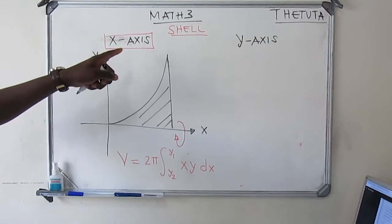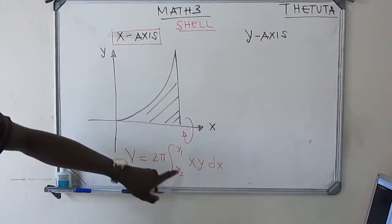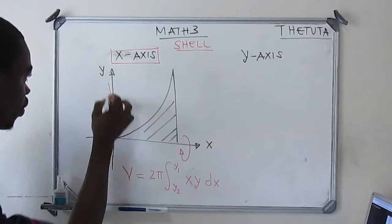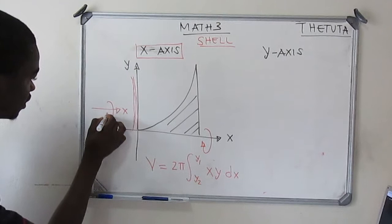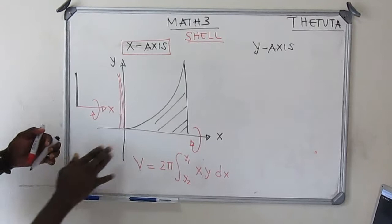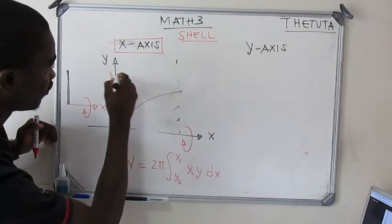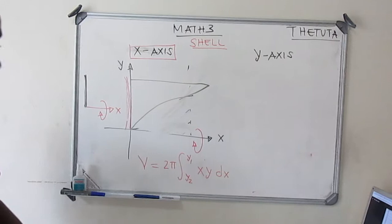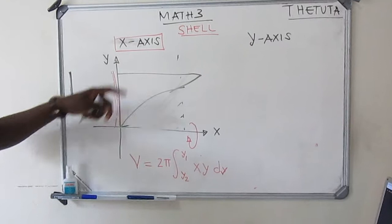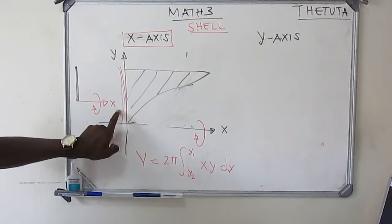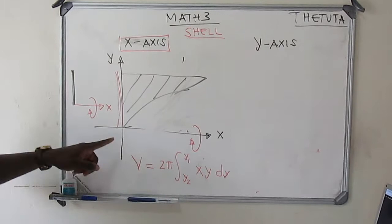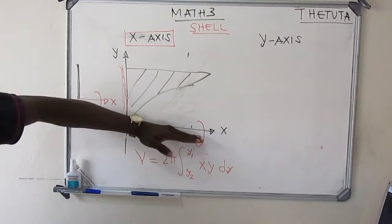Here's something important to note about shell method: the revolution of the body must involve a body revolved on the y-axis so that you can apply the formula. So if your body is rotating on the x-axis, the revolution of the body must be on the y-axis. You check the graphic, draw it, and if the body revolves on the y-axis while rotating on the x-axis, then you can apply shell method.